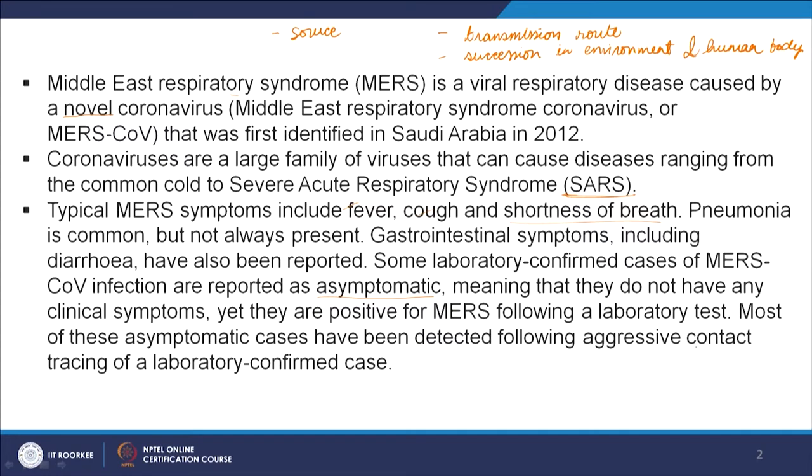Most asymptomatic cases were detected following aggressive contact tracing of laboratory-confirmed cases. Contact tracing means taking a good questionnaire and tracing back the history of the person who is sick. The patient is asked: who did you meet, what places did you travel, what food did you eat, where were you living, what novel things did you come in contact with in the past number of days? This is contact tracing — we trace the recent contact history of the patient to get an idea of the transmission route of the disease.